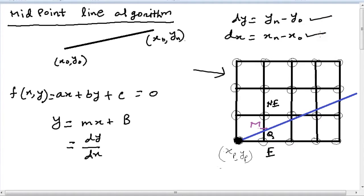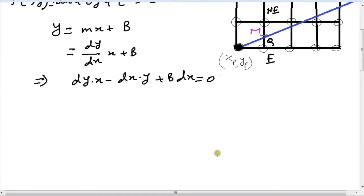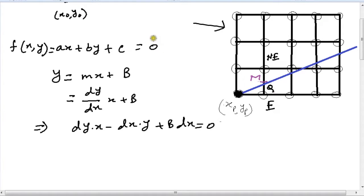Solving this equation gives us dy into x minus dx into y plus b dx equals 0.